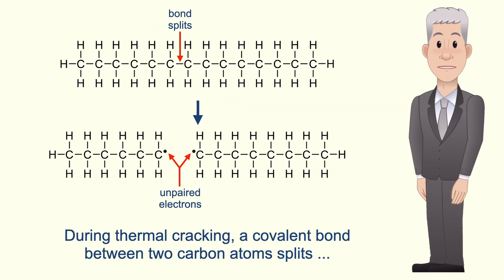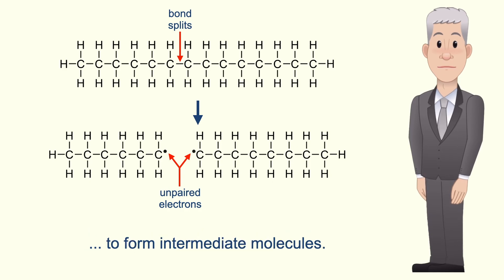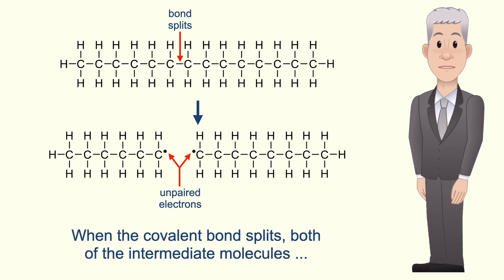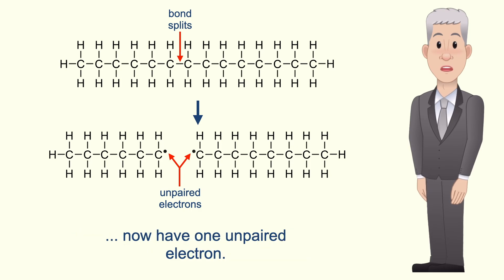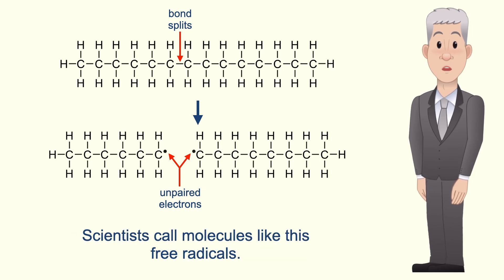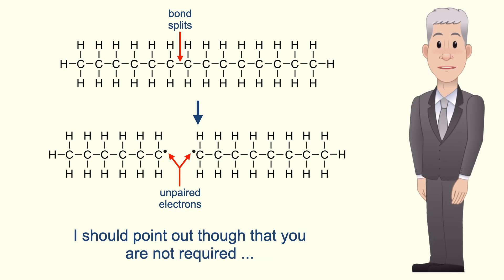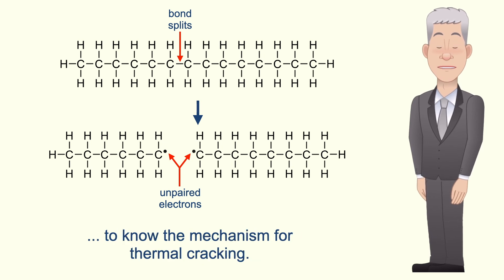During thermal cracking a covalent bond between two carbon atoms splits to form intermediate molecules. Remember that a covalent bond is a pair of electrons. When the covalent bond splits, both of the intermediate molecules now have one unpaired electron — scientists call molecules like this free radicals. We will be looking at other reactions involving free radicals in later videos. Note that you are not required to know the mechanism for thermal cracking.